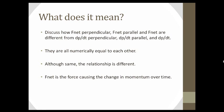So what does it mean? F_net perpendicular, f_net parallel, and f_net are different from dp/dt perpendicular, dp/dt parallel, and dp/dt. From Newton's second law, f_net is equal to dp/dt — however, they are only numerically equal. The relationship is different: f_net is the force that is causing the change in momentum over time. So f_net perpendicular is the force causing the perpendicular change in momentum, f_net parallel is the force causing the change in momentum in the parallel direction, and f_net is the total force causing the change in momentum.